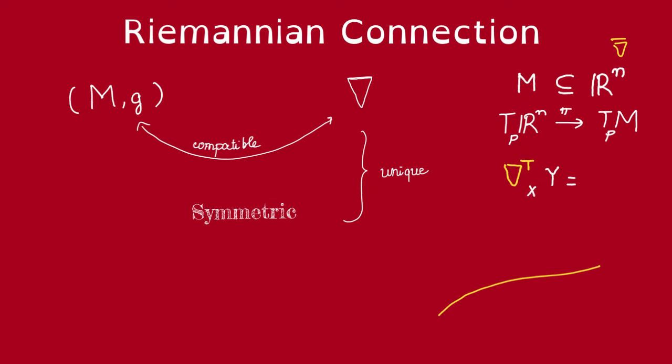First of all, we can extend X and Y to be vector fields on the whole of R^n. Then it makes sense to take the Euclidean connection of Y along the direction of X. Now at every point P, this is going to be a tangent vector in the tangent space to R^n at P.